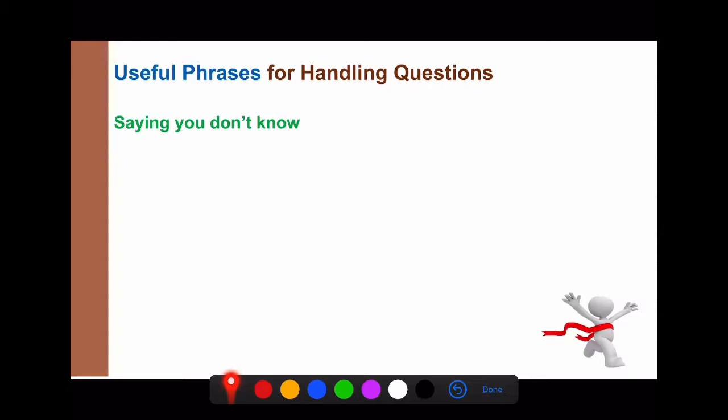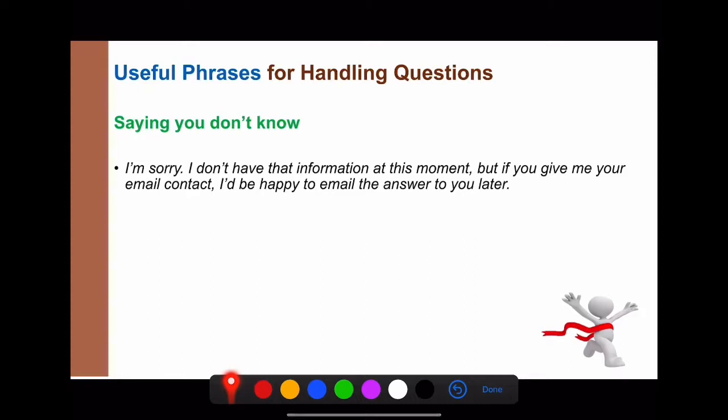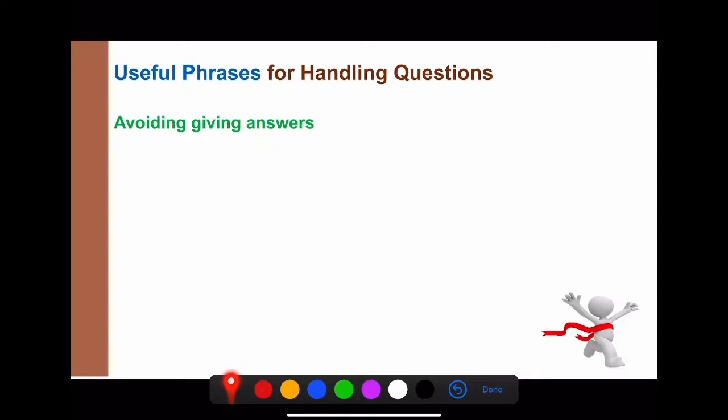If you truly don't know the answer, it's okay to admit it. You can say: 'I'm sorry, I don't have that information at this moment. But if you give me your email contact, I'll be happy to email the answer to you later.' This is completely acceptable — if the question goes beyond your prepared material, you can't be expected to answer everything on the spot.